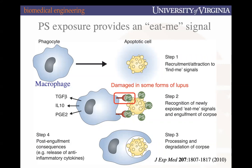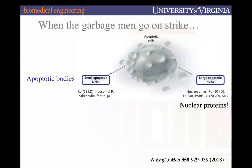Phagocytosis in the context of lupus involves two believed problems. Problem one: there's a dysfunction with phagocytosis where the dying cell — which has flipped phosphatidylserine to the outside — is not being engulfed and eaten. Inside the blebs are nuclear proteins. Think of it as the garbage men going on strike: the phagocytes are not doing their job of clearing out these dying cells. Problem one: phagocytosis is dysfunctional.